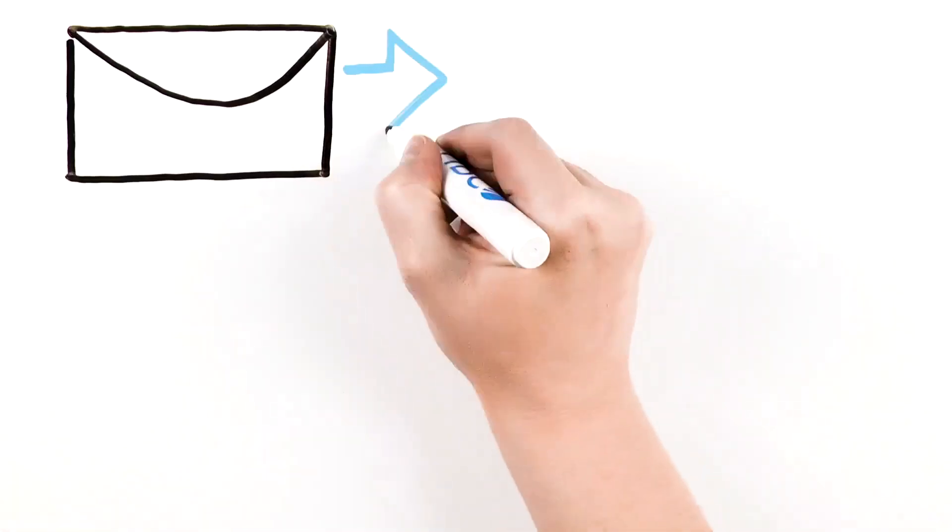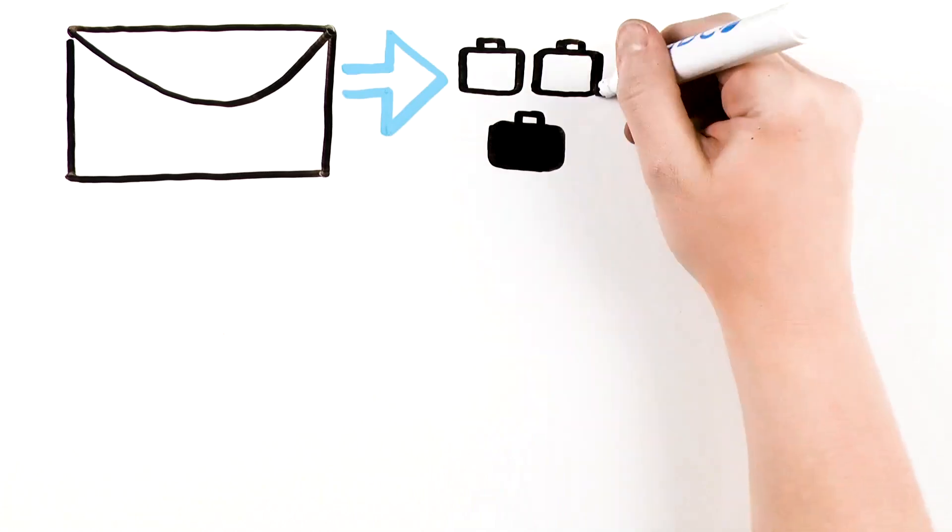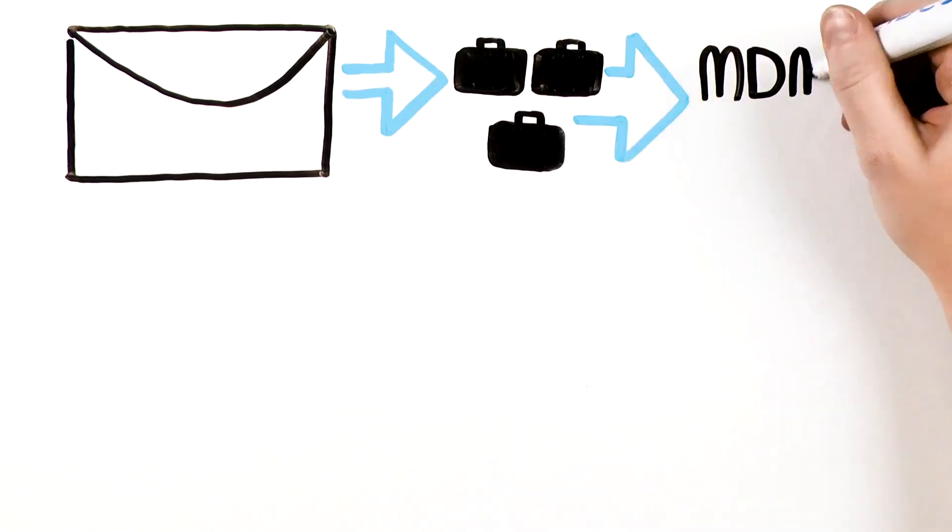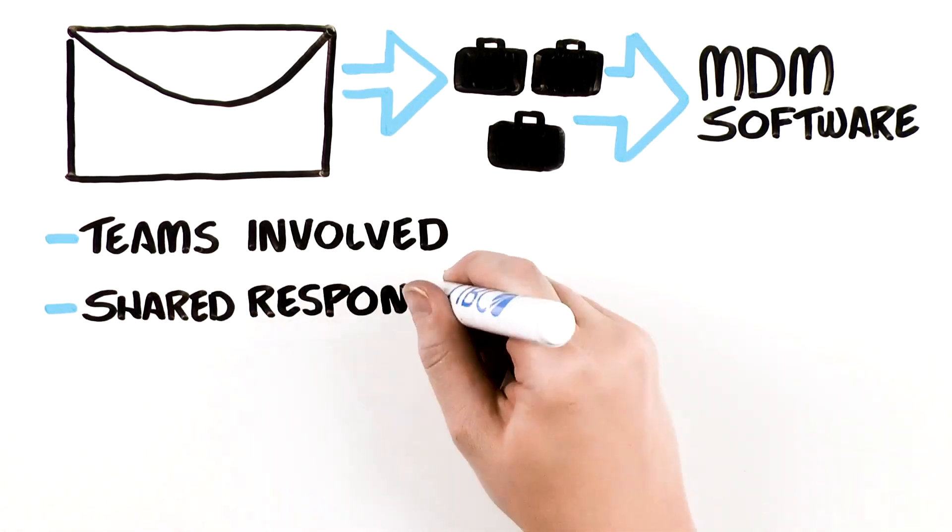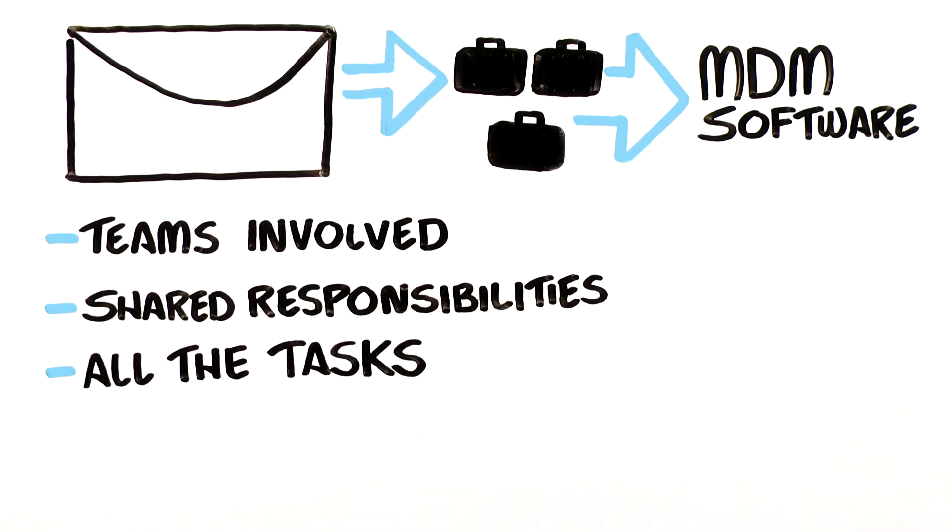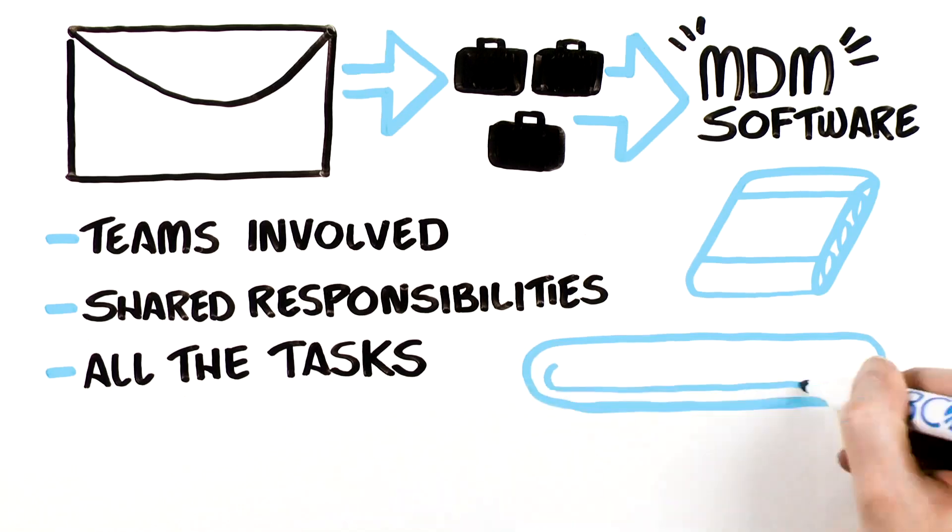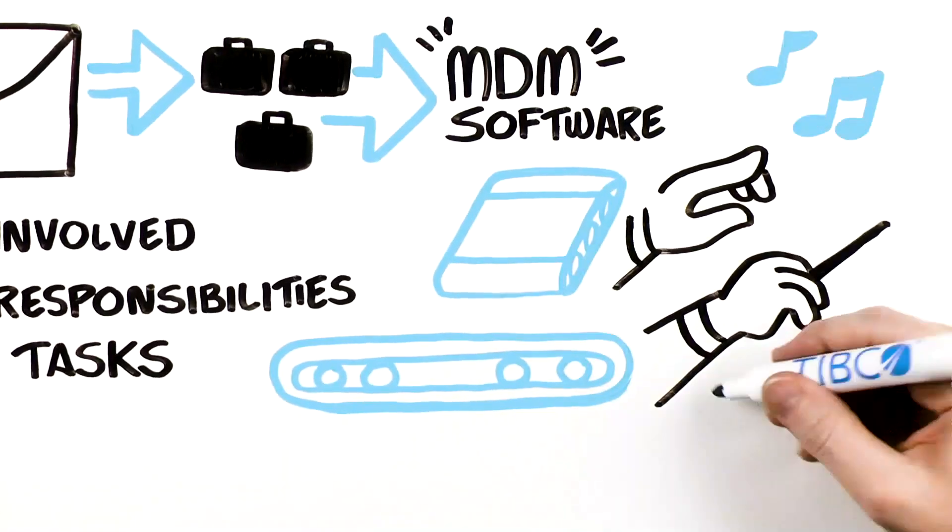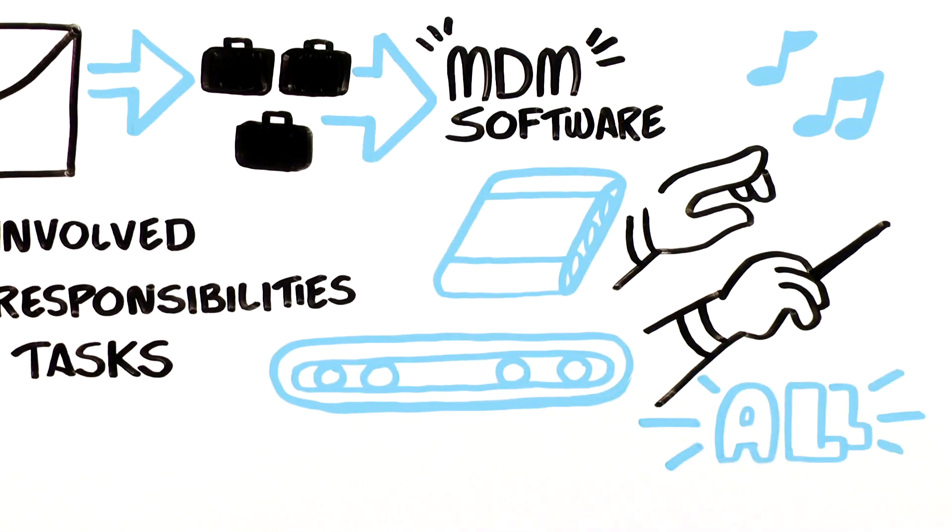The fact that master data is shared among business teams has profound implications for MDM software. Given all of the teams involved, the shared responsibility, and all the tasks that are required for master data management, there needs to be an established workflow or a way to orchestrate all the activities across the associated teams.